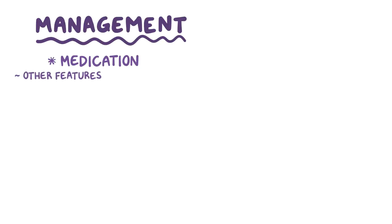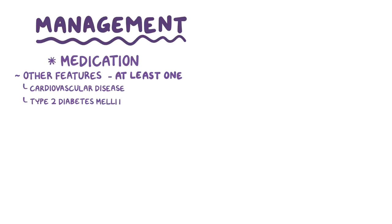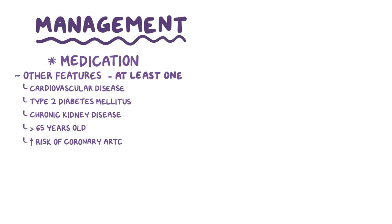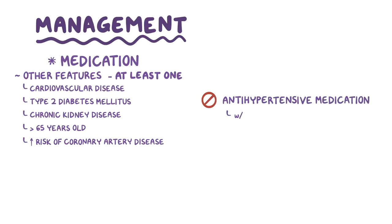Specifically, they need to have at least one of the following: cardiovascular disease, type 2 diabetes mellitus, chronic kidney disease, be over 65 years old, or have an elevated risk of coronary artery disease. On the flip side, it's generally recommended not to give antihypertensive medication to patients with stage 1 hypertension who are either over 75 years old or have no organ damage.